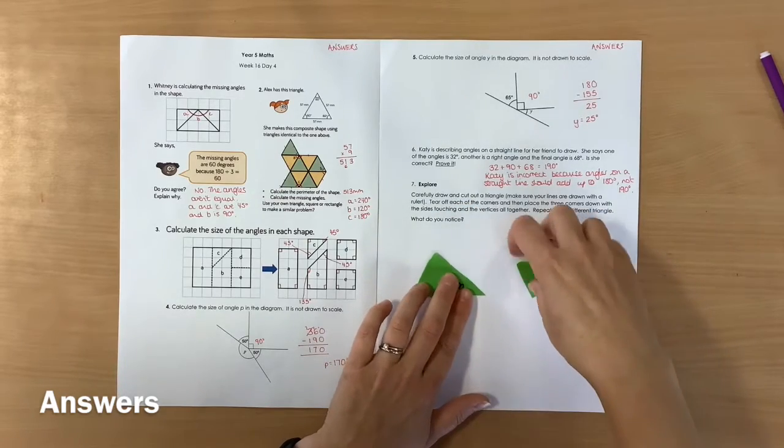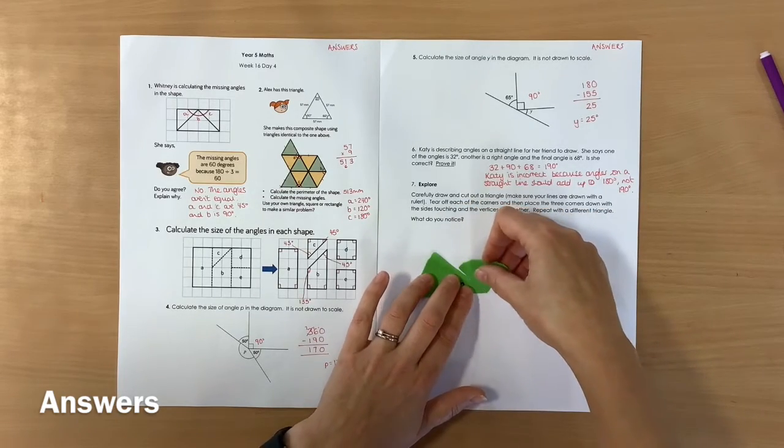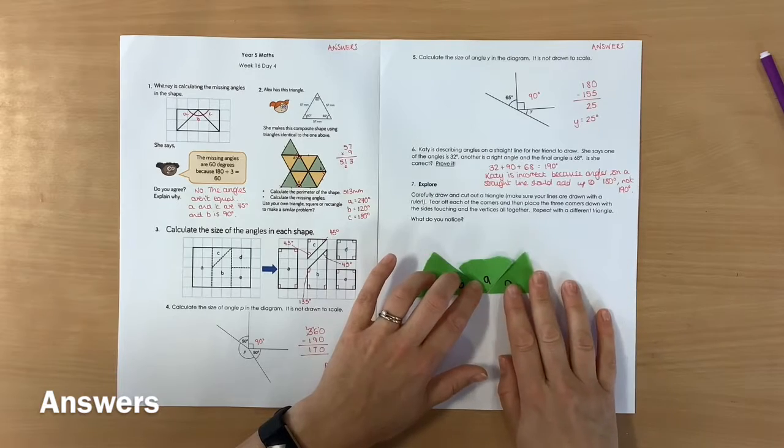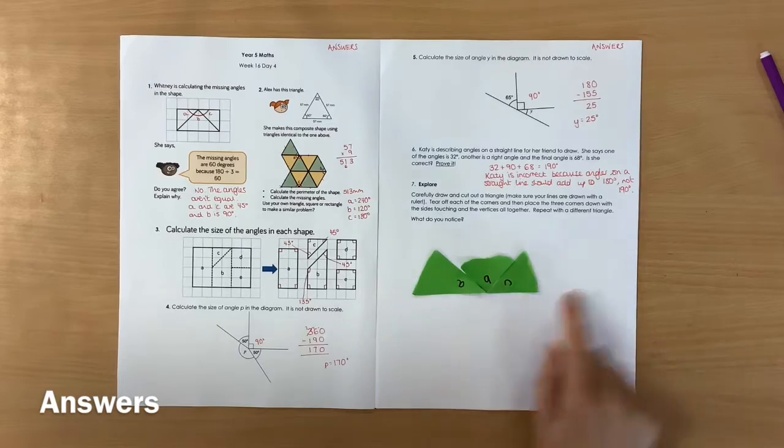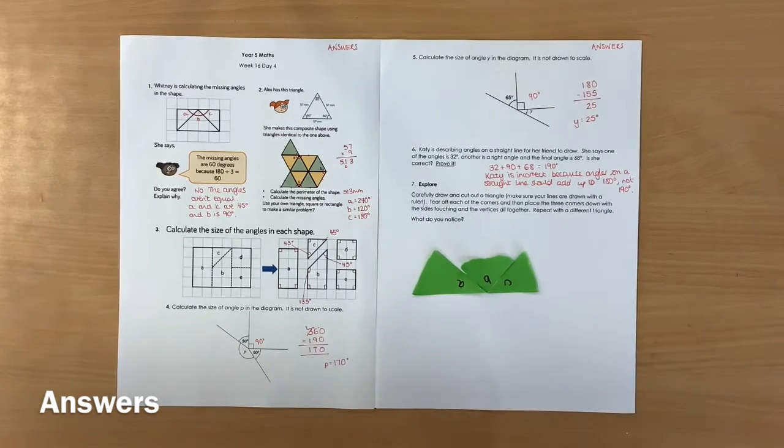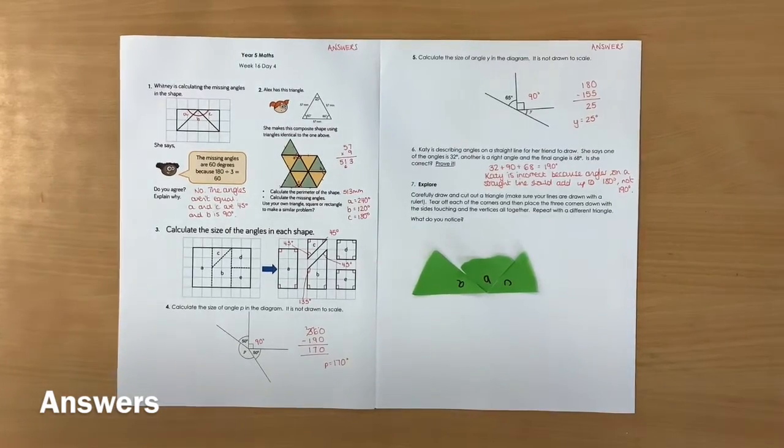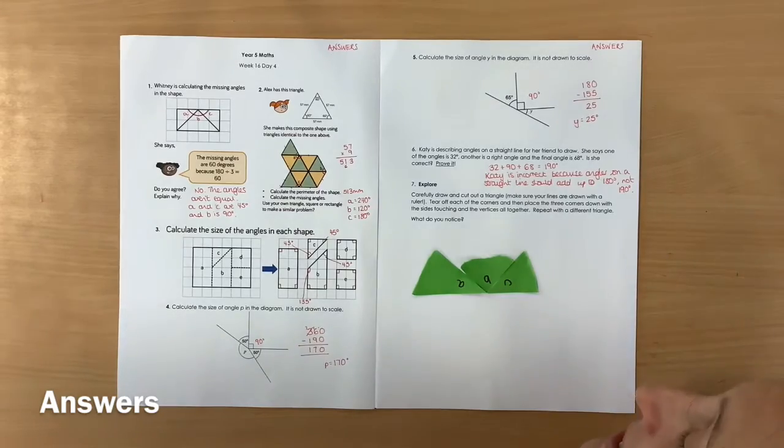So the vertices are the little bits in the very corner, aren't they? So I'm just going to place these down. Hopefully, what you'll see is all the angles of that triangle line up on a straight line. So the angles in the triangle are equal to 180 degrees.